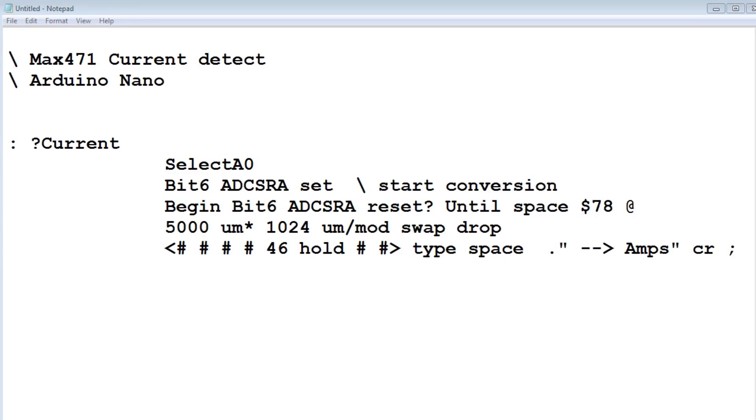Here's the code running on my Nano for my MAX471 current detection and measurement. It's written in Forth and it's very simple. The name of my program is Question Mark Current, so if I type that from the keyboard, it'll give me back the current flowing through the load. First, I select channel A0, that's my analog to digital converter A0 on my Nano. It will set bit 6 of the ADCSRA register, and that will start the conversion.